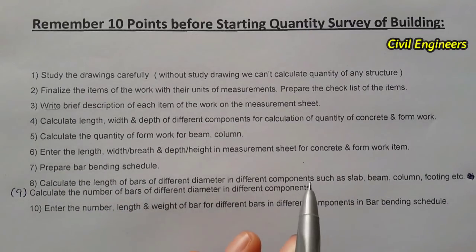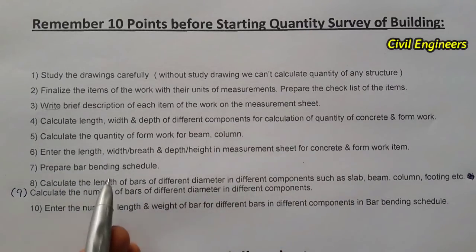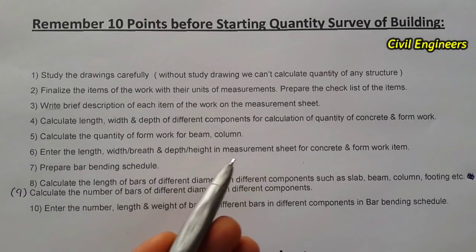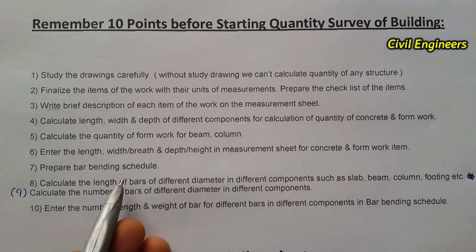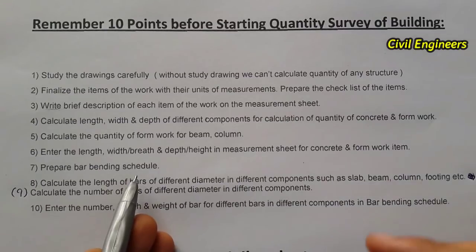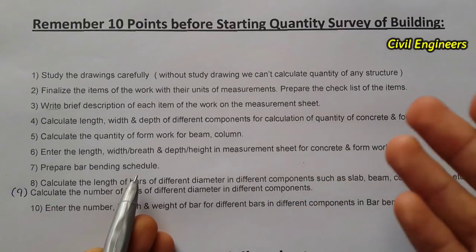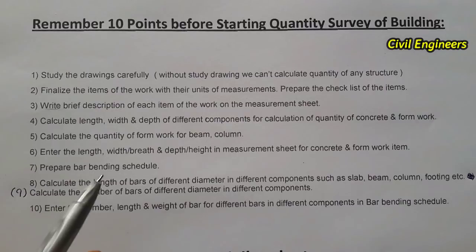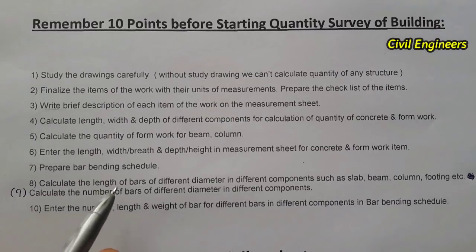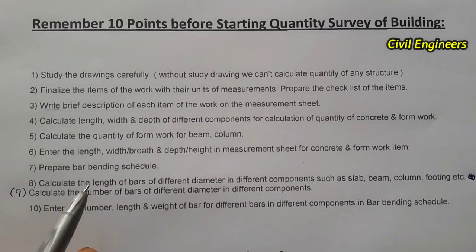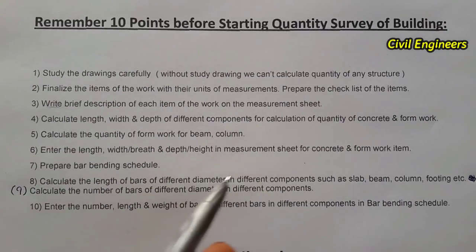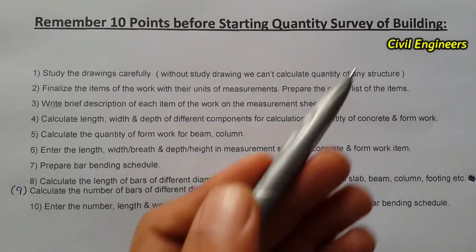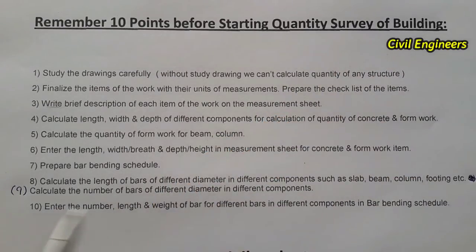The seventh point is to prepare a bar bending schedule. Bar bending schedule is very important because we have different types of steel, different diameters of steel, and different bend-up shapes. Without the bar bending schedule, we are not able to find the accurate quantity of any building structure.